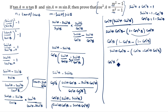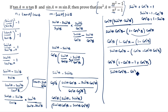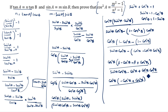Opening the bracket: cos square a times (1 minus cos square a minus 1 plus cos square b) divided by sin square a cos square b minus cos square a plus cos square a cos square b. Simplifying the numerator: minus 1 plus 1 cancels, leaving cos square a times (cos square b minus cos square a). In the denominator, cos square b is common: cos square b times (sin square a plus cos square a minus cos square a). Since sin square a plus cos square a equals 1, this simplifies.